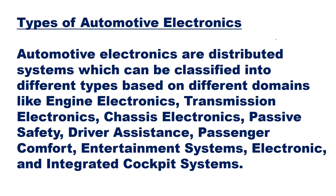Automotive electronics are distributed systems which can be classified into different types based on different domains. These include engine electronics — where you control the engine — transmission electronics — where you transmit data — and chassis electronics.